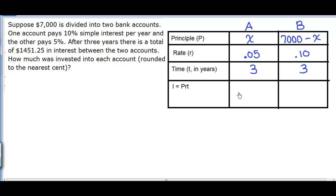So now we need to move on to the interest. Keep in mind the formula for interest is principal times rate times time. So for account A, the interest is X times 5% times 3, which will give you 0.15X. For B, principal times rate times time would be 7,000 minus X, that quantity times 10% times 3, which comes out to be 2,100 minus 0.3X.